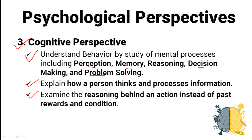For example, a person is deciding whether to take an umbrella before going out in the rain. He perceives the weather, checks his memory of past rainy days, thinks about the likelihood of getting wet, and then makes a decision based on all this information. All these mental processes influence the behavior of taking an umbrella or not. It is like understanding why a person does a certain act by looking at the thought processes and information processing system that leads to that behavior.